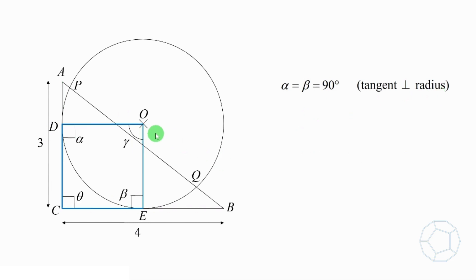Now, we look at the blue quadrilateral ODCE. Because the three interior angles are 90 degrees, using angle sum of polygon, the fourth angle gamma is also 90 degrees. In other words, we can say that ODCE is a rectangle.